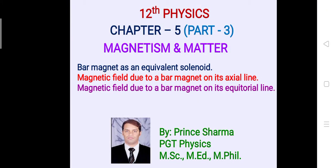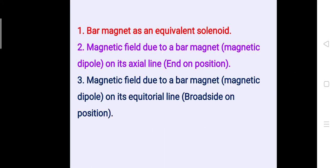Hello students. This is the third part of Chapter 5, Magnetism and Matter. In this part, we will discuss three topics: bar magnet as an equivalent solenoid, magnetic field due to a bar magnet or magnetic dipole on its axial line (end-on position), and magnetic field due to a bar magnet or magnetic dipole on its equatorial line (broad side-on position).